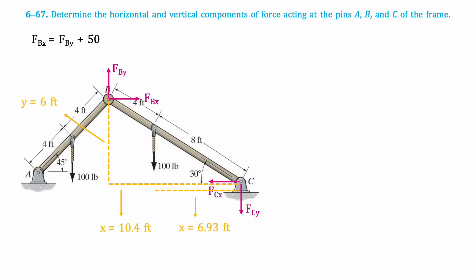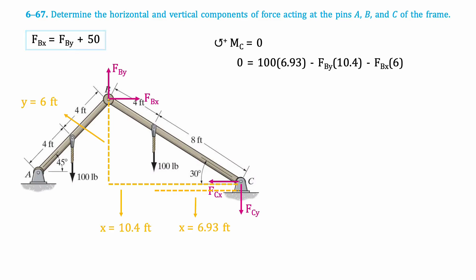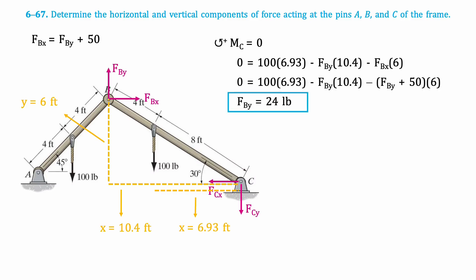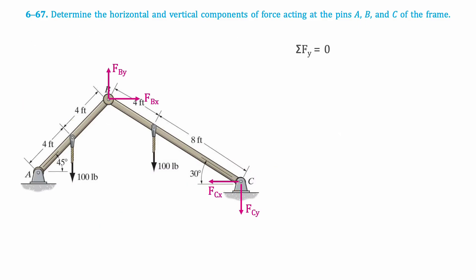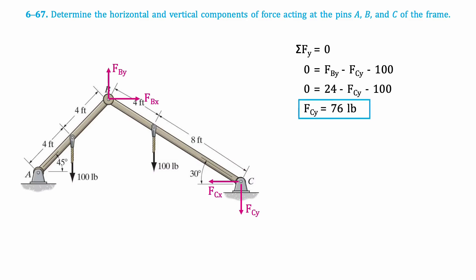Next, we'll take the moment about point C. We get the following equation, which has two unknowns. We can substitute Bx in this equation for the equation we previously found. Isolating the resulting equation for By gives 24 pounds. We can plug this value back into the equation we defined for Bx, and we get that Bx equals 74 pounds. Taking the sum of vertical forces gives that Cy equals 76 pounds. Taking the sum of horizontal forces gives that Cx equals Bx, which is 74 pounds.